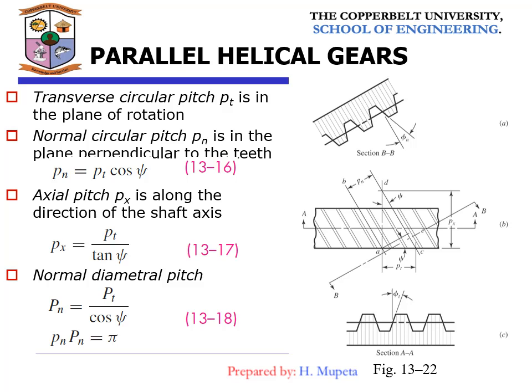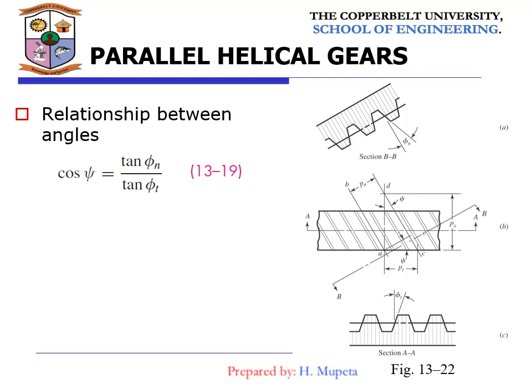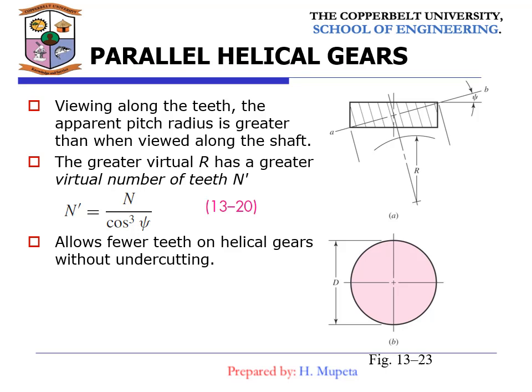The relationship between the angles is given by equation 13.19. When viewing along the teeth, the apparent pitch is greater than when viewed along the shaft, giving a greater virtual number of teeth, as given by equation 13.20 — this allows fewer teeth on helical gears without undercutting. For interference with helical gears, the pressure angle in the tangential direction and the smallest number of helical spur pinion teeth that will run without interference are given by the corresponding equations, along with the largest gear with the spur pinion and the smallest pinion that can run with a rack.